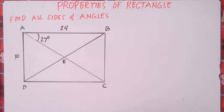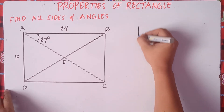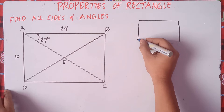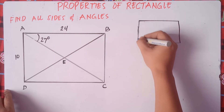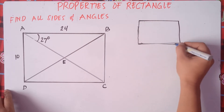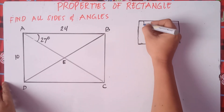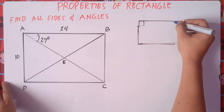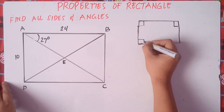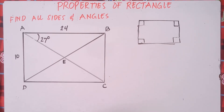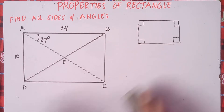So once again, class, a rectangle — a basic definition of a rectangle — is a polygon, a four-sided polygon with four right angles. That's the basic definition of a rectangle: a polygon with four right angles.